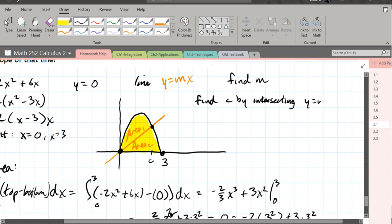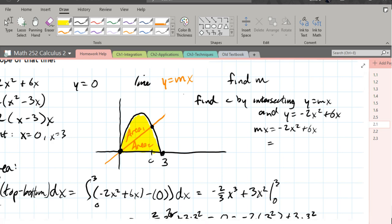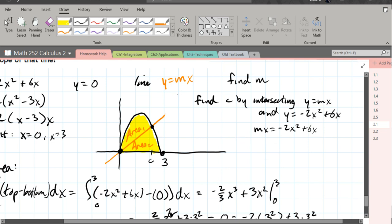So intersecting y equals mx and y equals negative 2x squared plus 6x. So we're setting the y's equal. We have mx equals negative 2x squared plus 6x. I like all my x squared terms to be positive, so I'm going to add 2x squared to the left. 2x squared plus mx minus 6x equals 0. 2x squared plus m minus 6x equals 0.